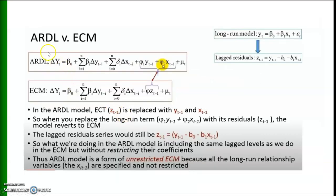This is the relationship between ARDL and ECM. In ARDL we use these long-run coefficients, while in ECM we use phi times z_{t-1} — the lagged value of the residuals. In the ARDL model, the error correction term z_{t-1} is replaced with y_{t-1} and x_{t-1}. So when you replace the long-run term with its residual, the model reverts to ECM.